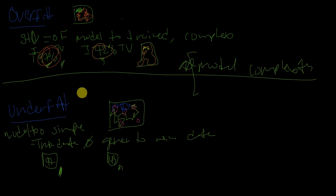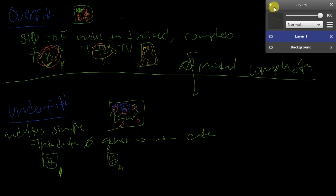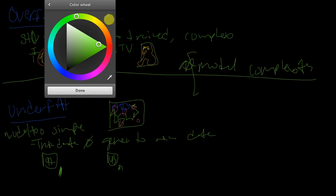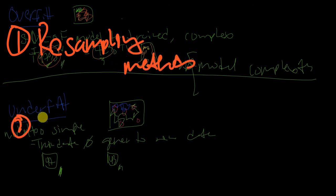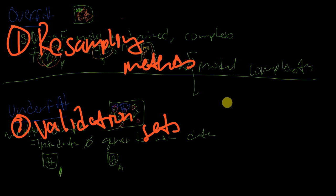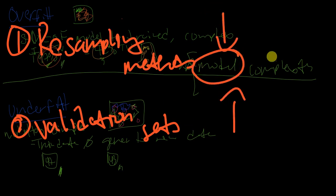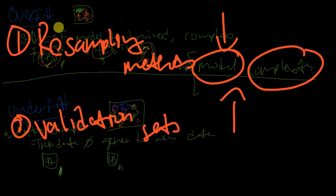There are two additional techniques we can use to help find that sweet spot in practice. The first is resampling methods. The second is validation sets. Think of these as two approaches that bring us back closer to model complexity balance, helping us find the right point between overfitting and underfitting.